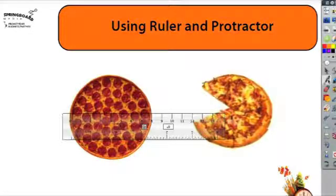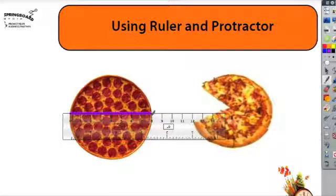Anytime you have the ruler up on your screen and you select the pen tool, it's going to make an exact straight line. So now I can see that this image of pizza is exactly 8 centimeters wide.